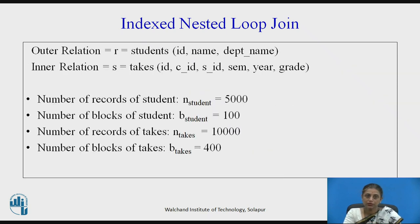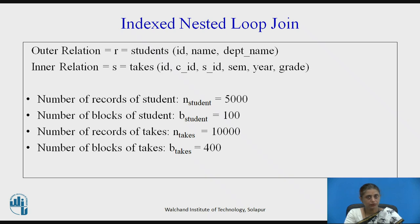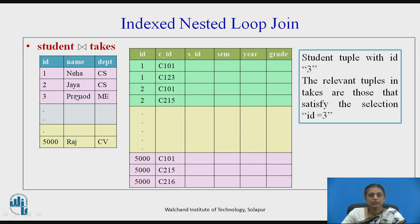Let us look at this example again. We have two relations: one is student and the other is takes. In students, the attributes are id, name, and department name, whereas in takes it is id, course id, section id, semester, year, and grade. The number of records in the student relation are 5000 with 100 blocks, and the number of records in takes are 10000 with 400 blocks. The id is the common attribute between student and takes.